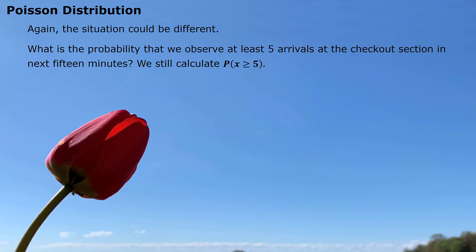Continue. If we ask the probability observe at least five arrivals at the checkout section in next 15 minutes, we are talking about 15 minutes. Our foundation changed. The event situation, we ask the event is at least five arrivals. Maybe five, maybe six, seven, eight, nine, ten. That's a long list. We use the shortcut, cut off the other ones not included, which is zero, one, two, three, four. They are not included. We use one minus all those. We get equal or greater than five.